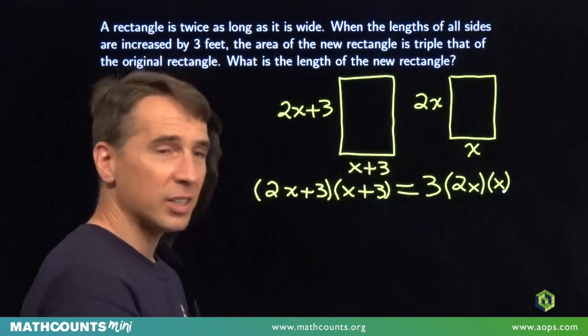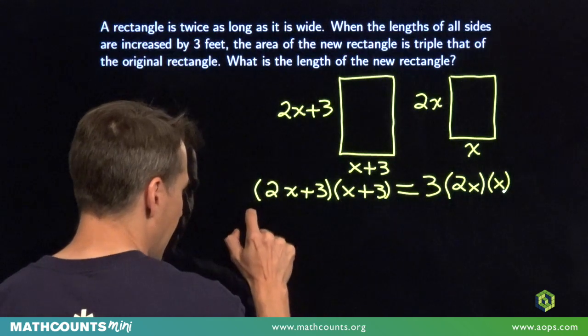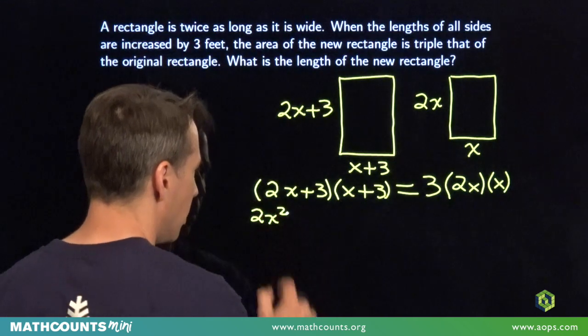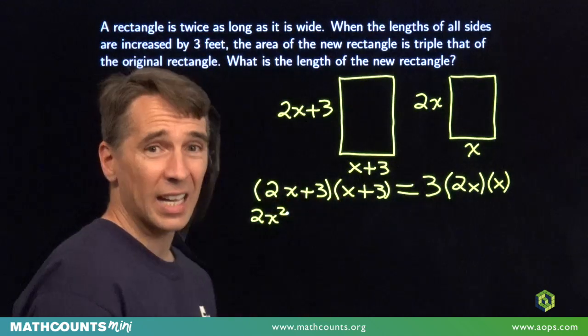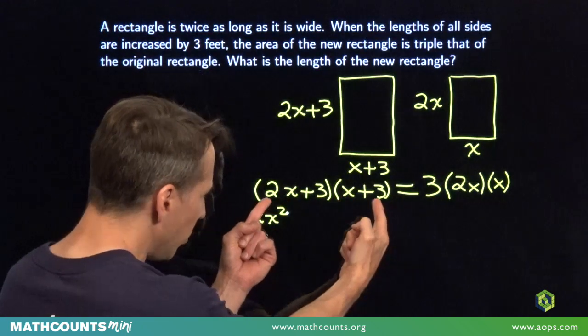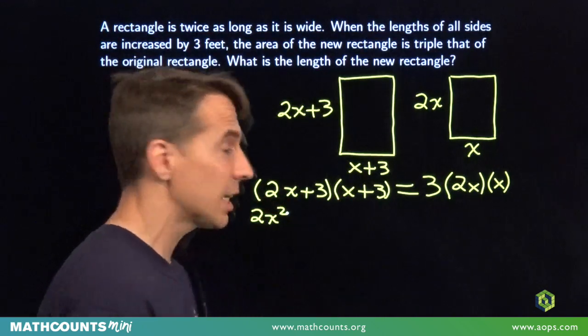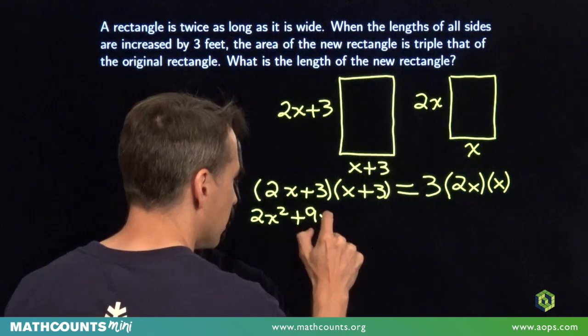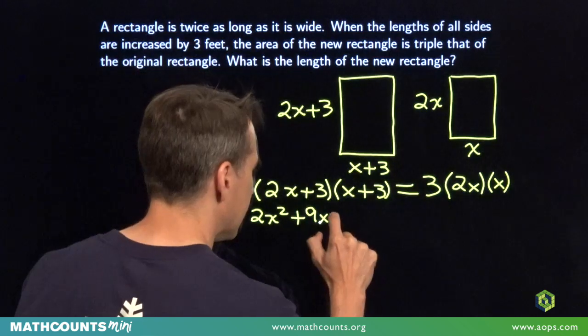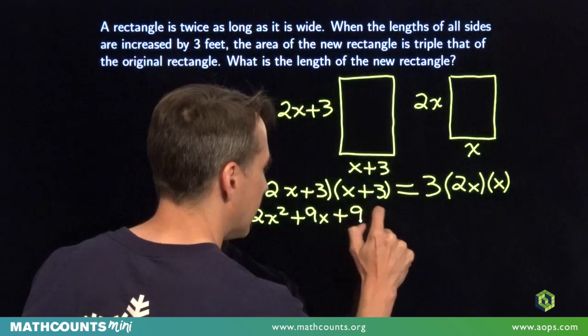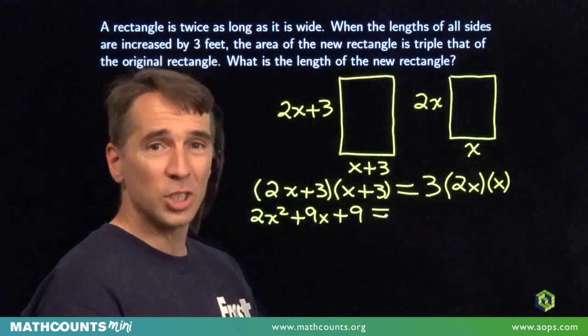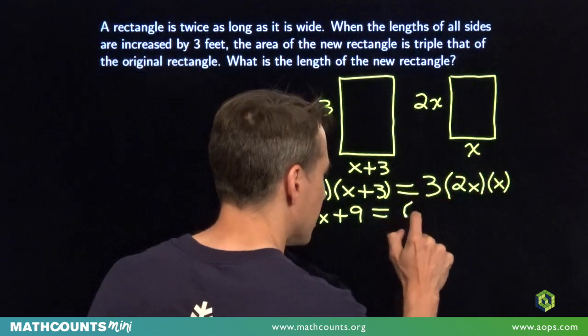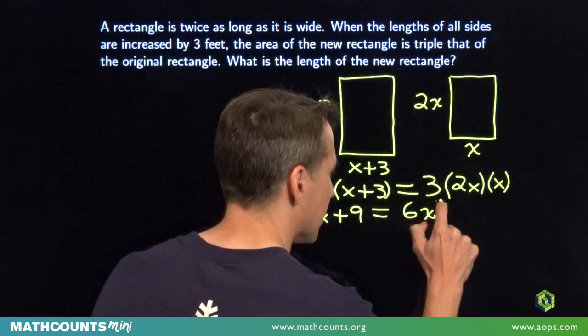We're going to multiply out this side. 2x times x gives us 2x squared. And then 3 times x gives us 3x, and then 2x times 3 gives us another 6x. Put those together, we have 9x. Then 3 times 3 is 9. Then over here, 3 times 2x times x gives us 6x squared.